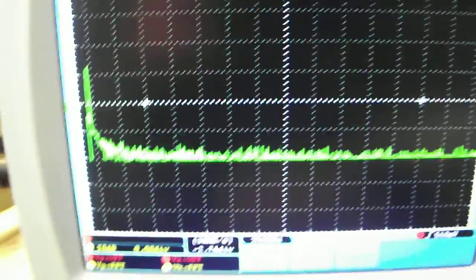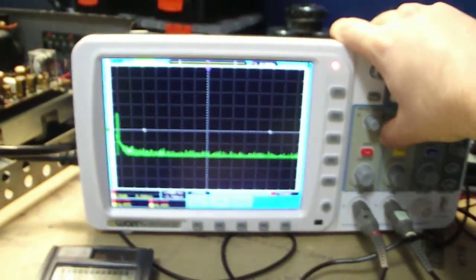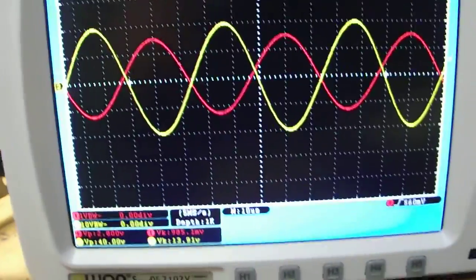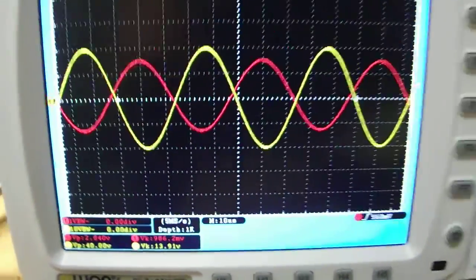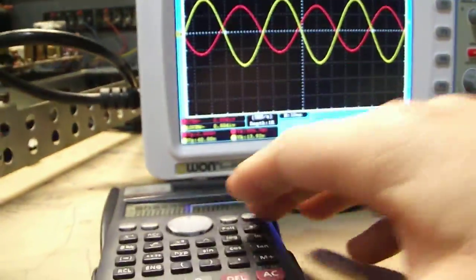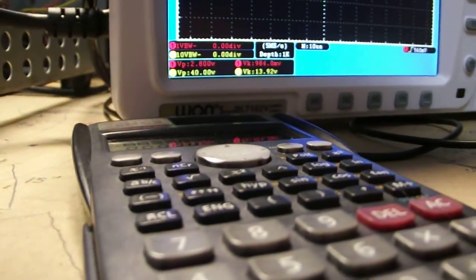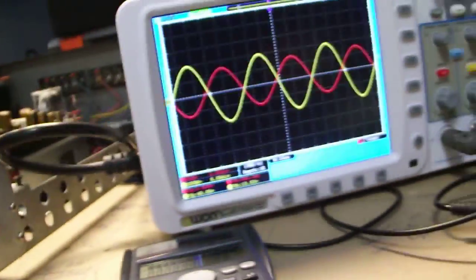And go back to the waveform. And that's at 13.9 volts. So if we take that as a reading, 13.9 squared divided by 8. That's 24 watts per channel.